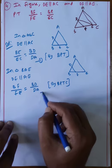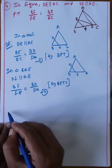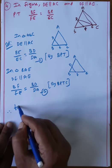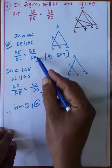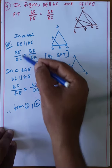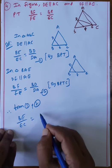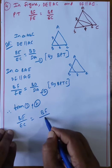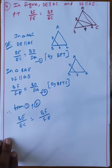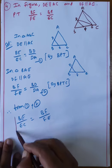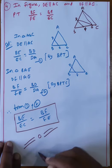From equations one and two, since BD by DA appears on both right-hand sides, BE by EC equals BF by FE. Hence proved.